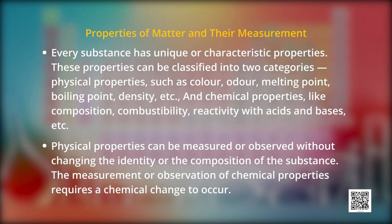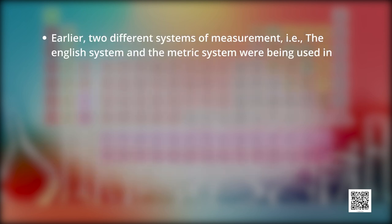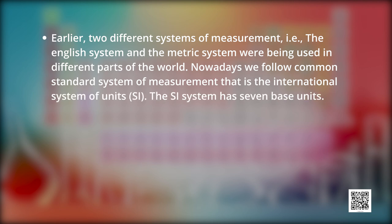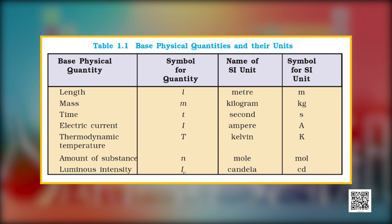Earlier, two different systems of measurements, the English system and the metric systems, were being used in different parts of the world. Nowadays, we follow a common standard system of measurement: the international system of units. The SI system has seven base units. Now children, please look to the screen and see what are these basic units. The basic unit of length is meter. The basic unit of mass is kilogram. And now you can see there are so many further units which you will use in your coming chapters.